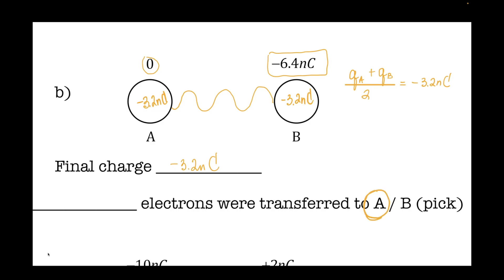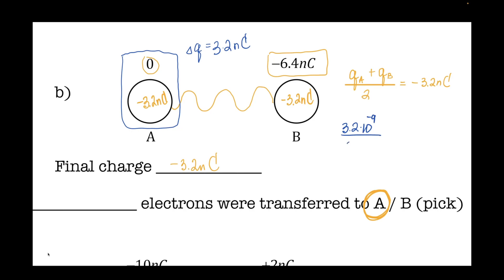From which sphere to which? Obviously to sphere A, because it was less negative. Now how many? Let's look not at the final charge, but at the change — from zero to negative 3.2 nanocoulombs. It gained electrons. If the change in charge is 3.2 nanocoulombs, I divide by the charge of one electron: 3.2 × 10⁻⁹ over 1.6 × 10⁻¹⁹. That gives 2 × 10¹⁰ — so 2 × 10¹⁰ electrons were transferred.